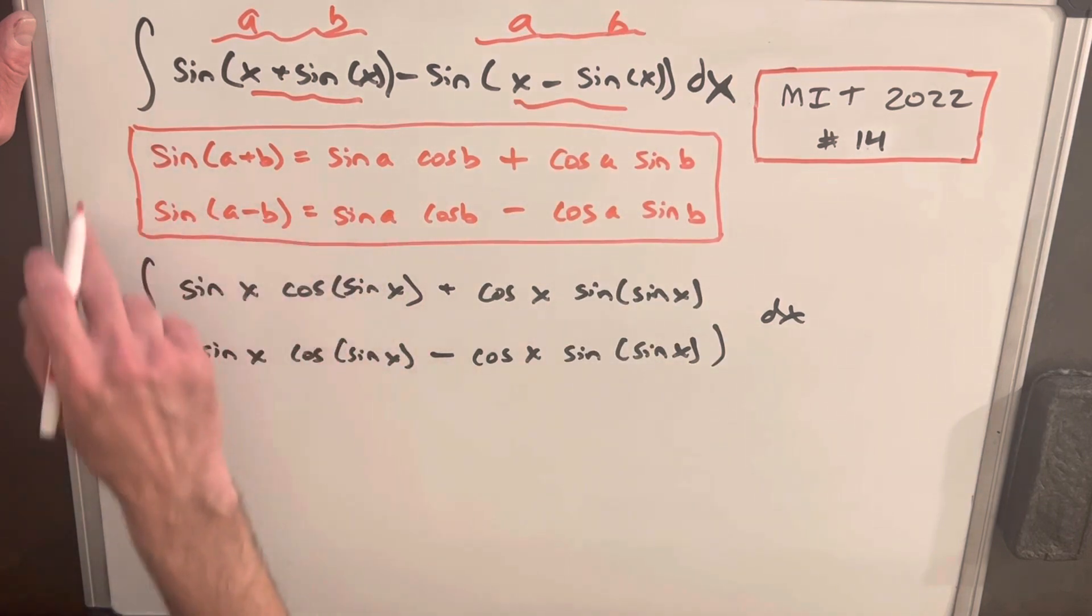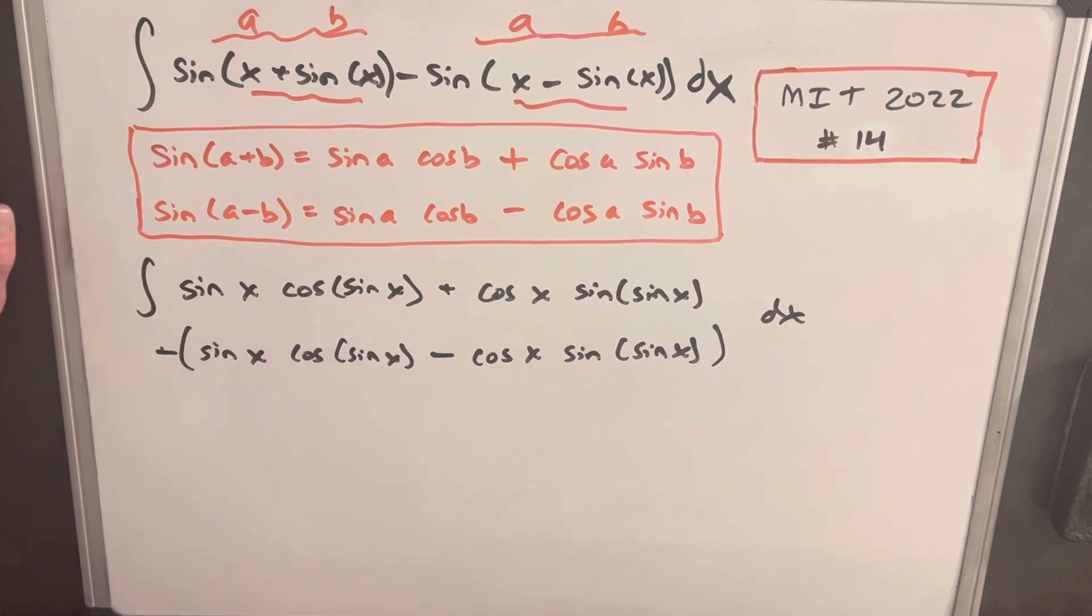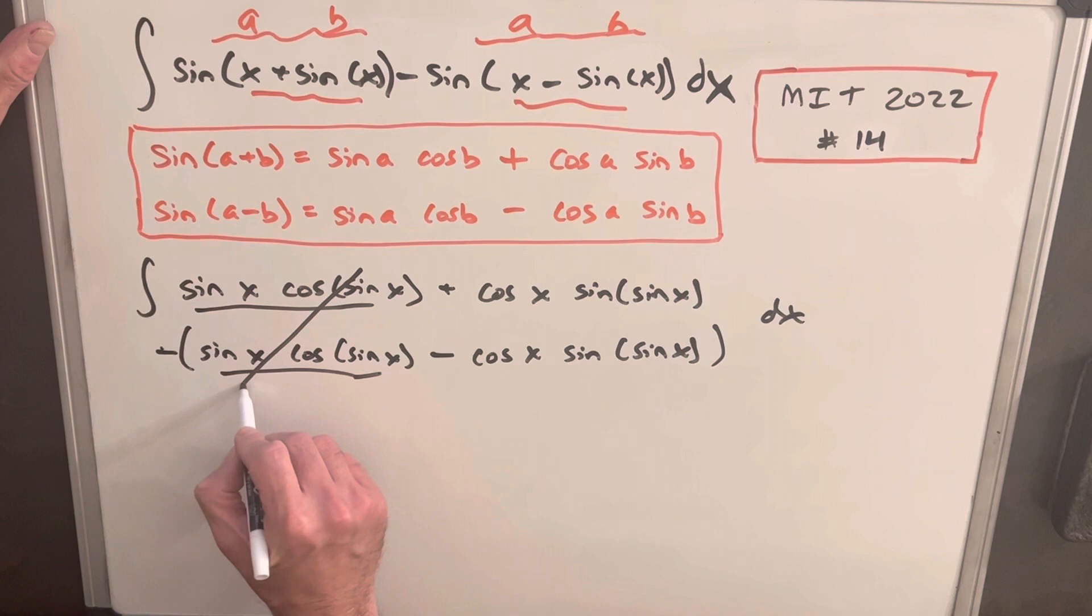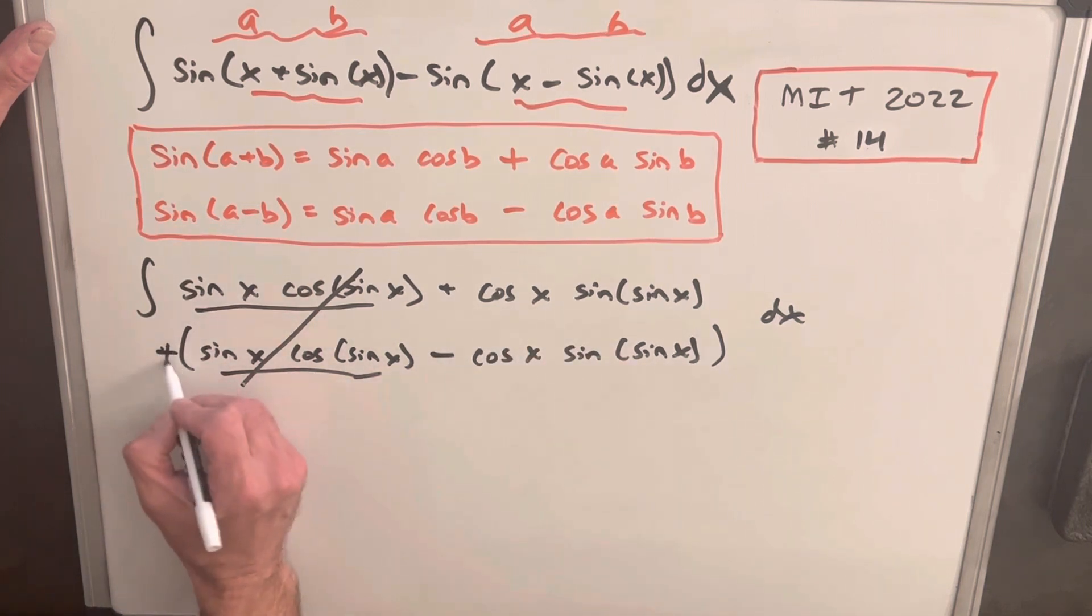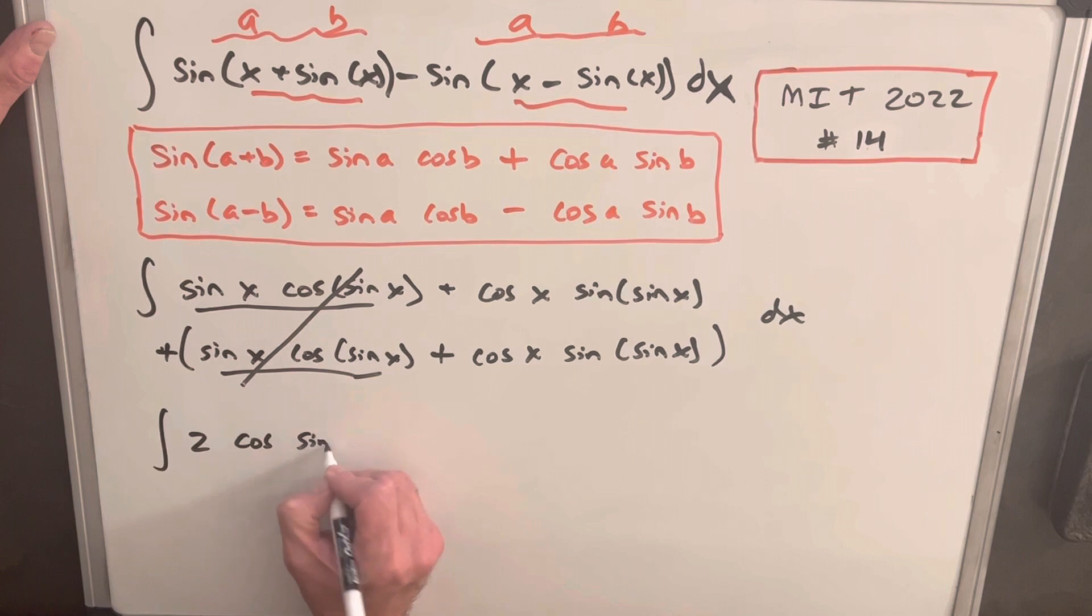So we use that and we rewrote this whole integral. I wrote it this way for two reasons: I was going to run out of room, but also because it's going to line up nicely. You'll see that this term is exactly the same as this term. We have this minus sign, so this one's going to cancel. Then here with these, this is the same term but we have minus minus, this is going to be a plus, and then we're going to end up with two of these: 2 cos x sin(sin x) dx.